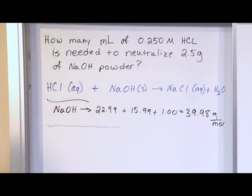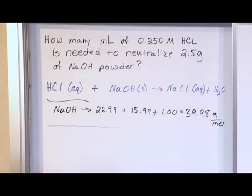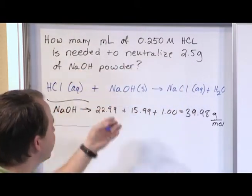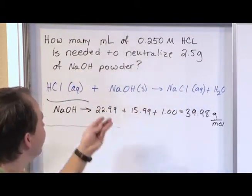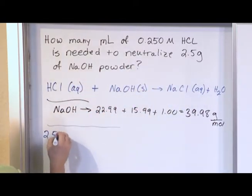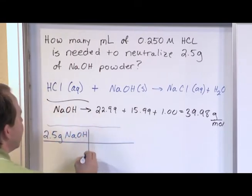So you always want to start with what you know. Now it is true that you know what the concentration of your acid is, but really it makes more sense to start with what you're actually reacting. This is what you're given as sort of like the initial quantity. So you want to start with that, 2.5 grams of NaOH.